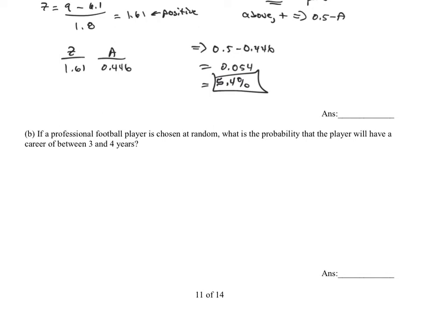Okay, it says, if a professional football player is chosen at random, what is the probability that they will have a career between 3 and 4 years? So we want between here. We need to calculate two separate Z-scores. We need to determine, are those Z-scores the same sign? Are all those Z-scores opposite signs? Let's just give it a go and figure it out here.